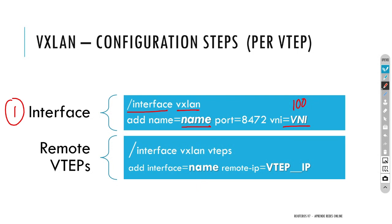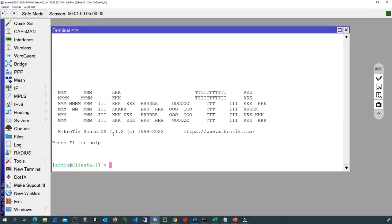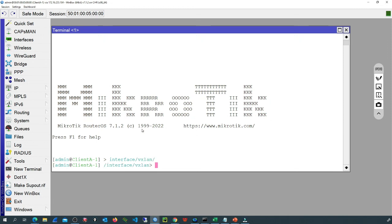Once we have defined the interface, we need to add the remote VTEPs. VXLAN can have just one remote VTEP or multiple remote VTEPs, supporting a point-to-multipoint topology. We will specify the interface we want to use and then specify the IP of the remote VTEP — that IP must be reachable. Once we're aware of these steps, we can go to the terminal and navigate to the menu interface VXLAN.